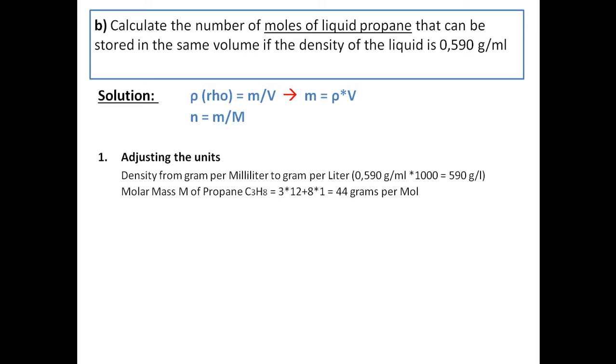it's the density from gram per milliliter to gram per liter, which is 590 gram per liter. And the molar mass, which is 3 times the molar mass of C and 8 times the molar mass of H, which adds up to 44 grams per mole.